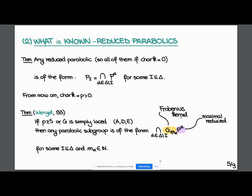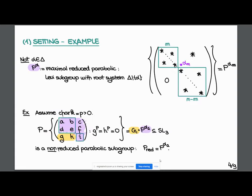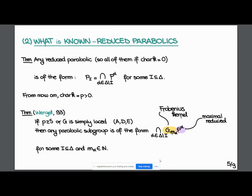The result is from Wenzel. He proved that if we have either p at least five or the group is simply laced—meaning the Dinkin diagram has no multiple edges, so type A, D, or E—then any parabolic subgroup is of the form: we fix I as a subset of delta and add a bit of non-reducedness. As in the previous example, we modify by a Frobenius kernel of some height. We fix integers M_alpha, multiply by P_alpha, and intersect over delta minus I.